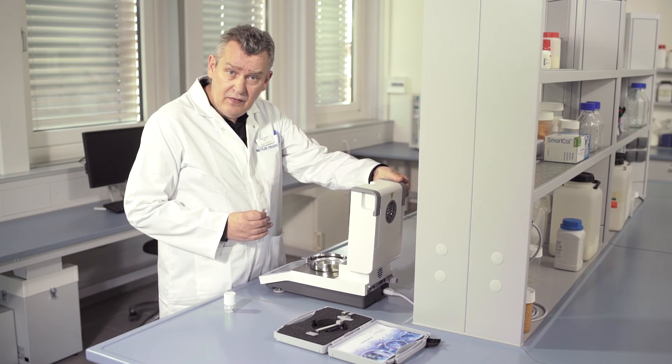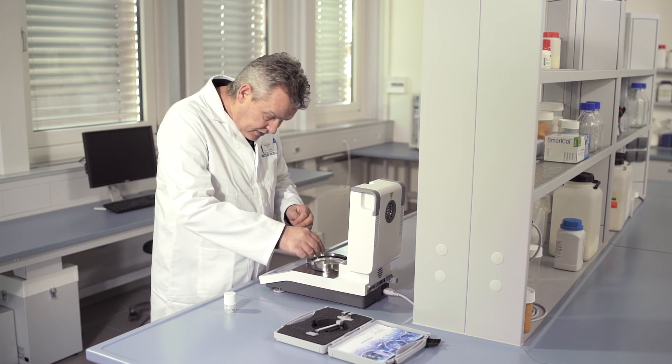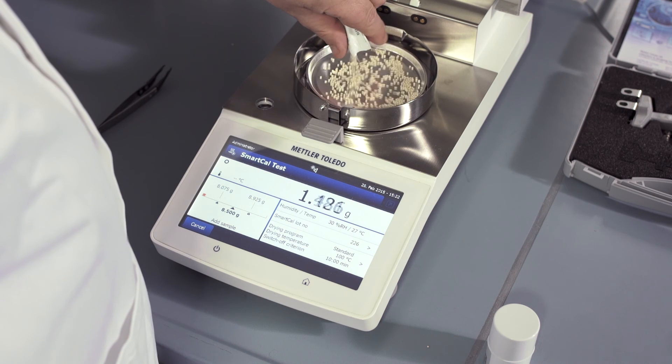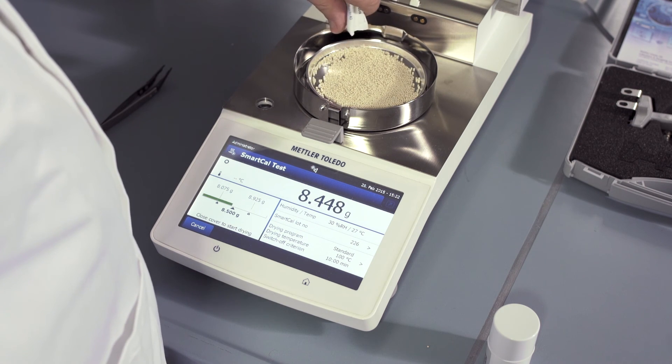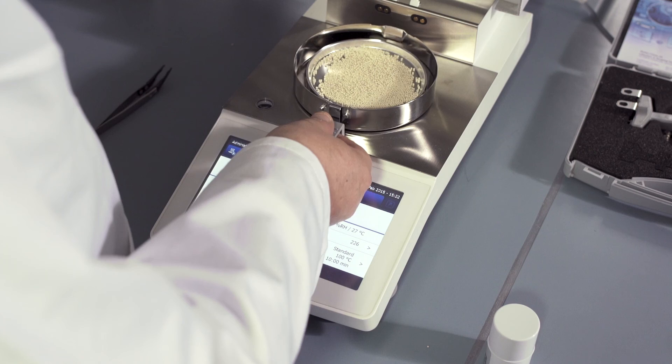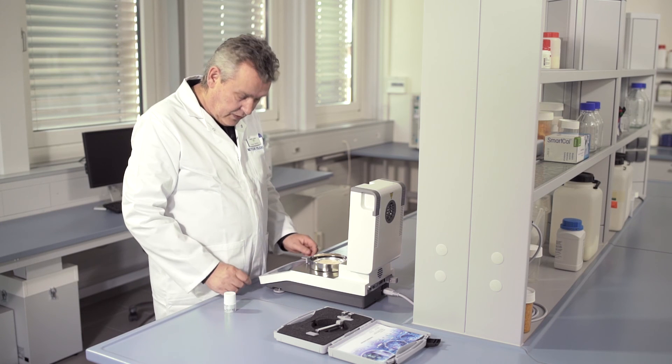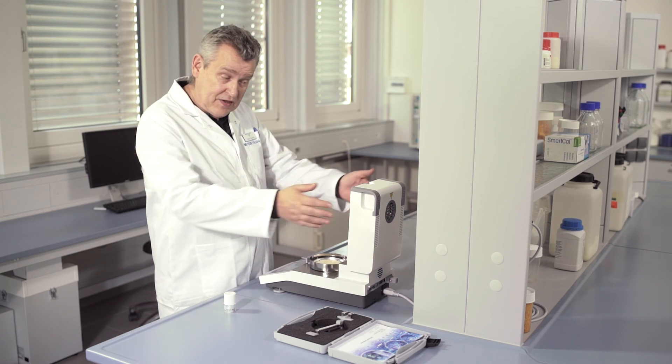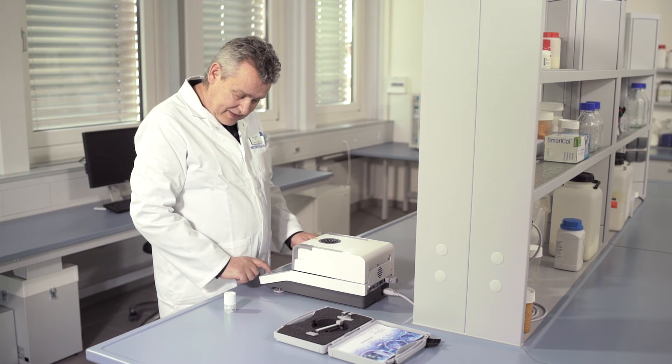Then open the lid and distribute the Smart Cal evenly over the entire sample pan, making sure that it's distributed evenly. Then simply close the lid and the Smart Cal test will automatically start.